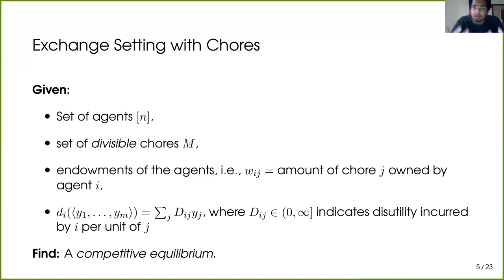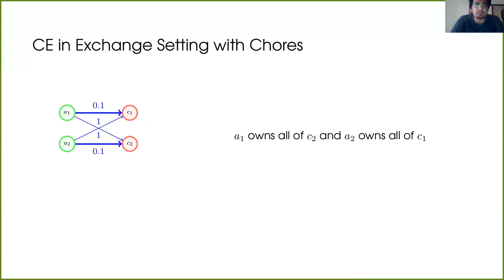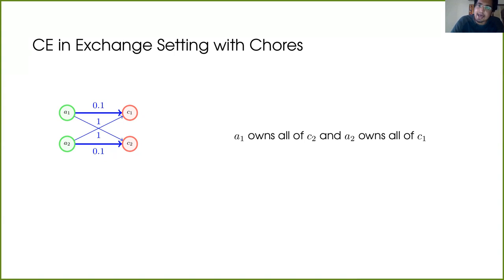Our goal is to find a competitive equilibrium. I will extend the concept from the goods setting through a small example. Consider two agents A1 and A2, and two chores C1 and C2. Agent A1 owns all of C2 and A2 owns all of C1. The disutility matrix shows that each agent has very high disutility for the chore they own but low disutility for the other's chore. A natural thing is to simply exchange the chores to minimize disutility, and I will show exactly this happening through the notion of competitive equilibrium.